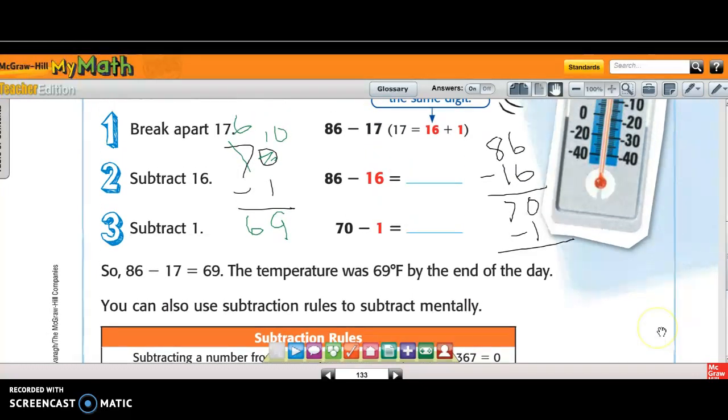So you notice that they wanted to have the numbers in the ones place the same. They could have subtracted, you know, they could have broken 17 to 10 and 7, or 11 and 6, right? They could have done it that way too. 11 and 6, and then they could have done it this way. Instead of 16 plus 1, they could have done 11 plus 6.